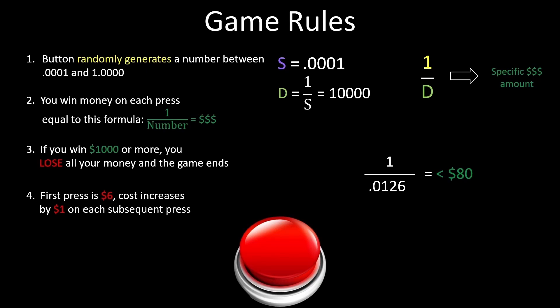The exception though are the numbers that result in $1,000 or more, because they all cause you to lose the game and take home zero. We can call these numbers L. To find L, we first divide 1 by $1,000 and get .001. This serves as a threshold on the numbers we can generate and means any number between .0001 and .001 will lose us the game. We do a trick similar to before and find that there are 10 numbers that will give us zero dollars.